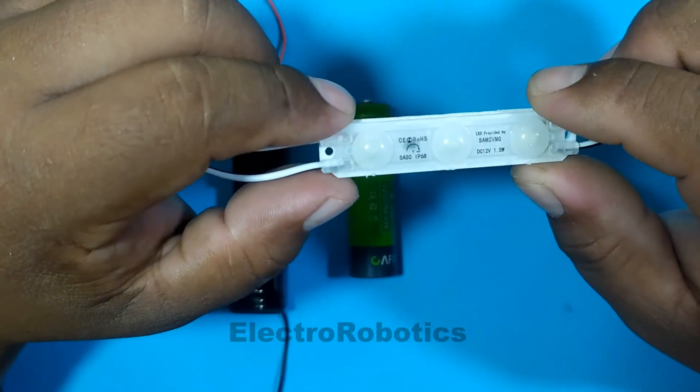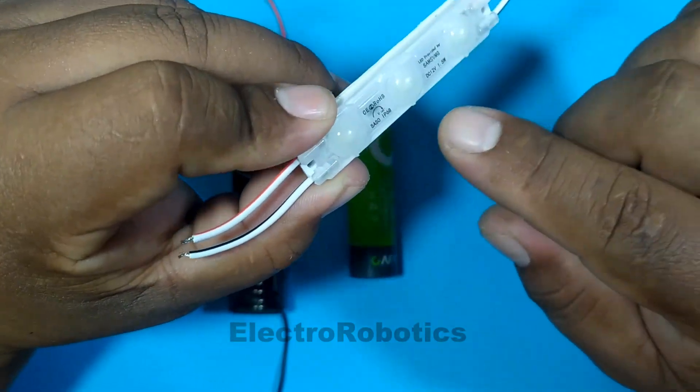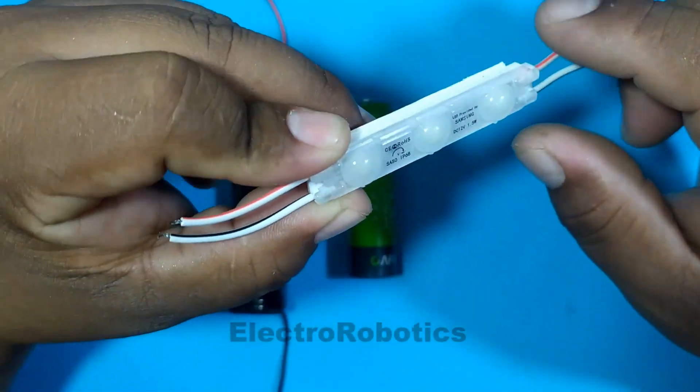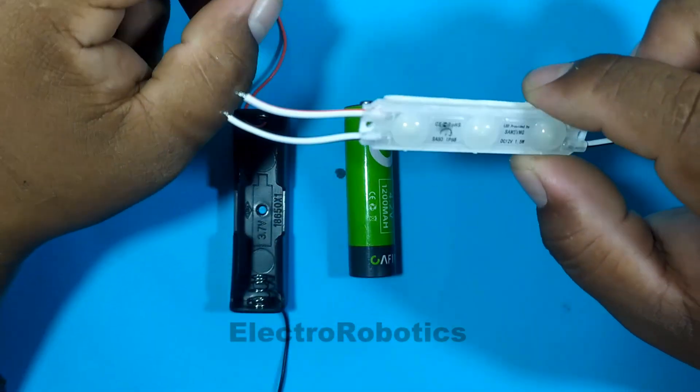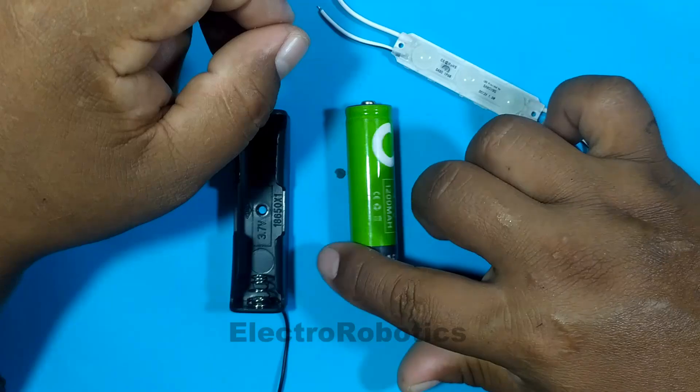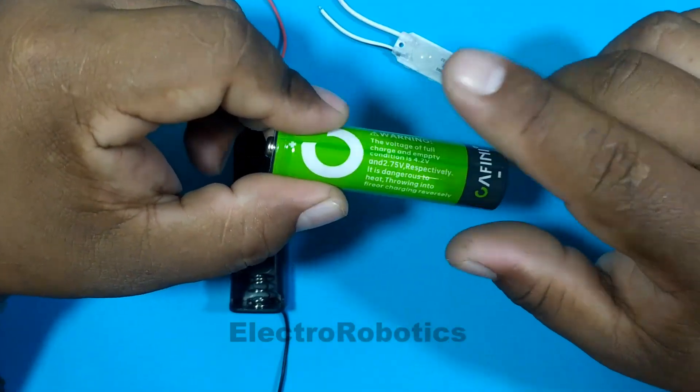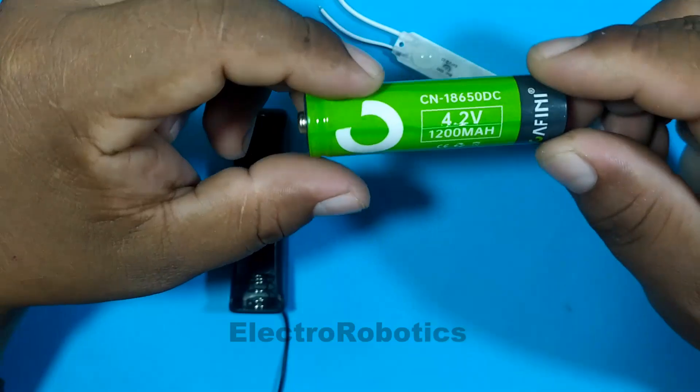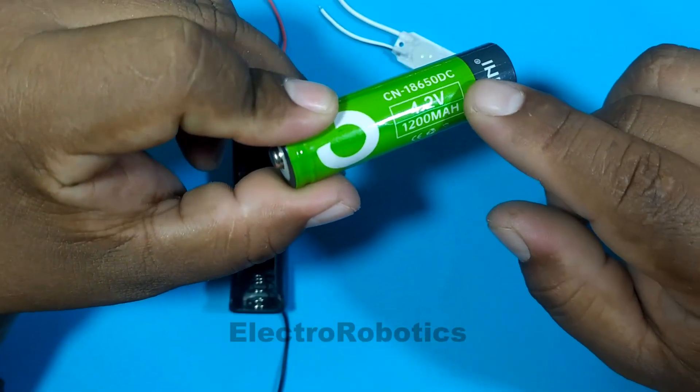This module can be installed both indoors and outdoors as it comes completely sealed. We will make this LED module work using only a rechargeable lithium battery, which can deliver a maximum voltage of 4.2 volts.